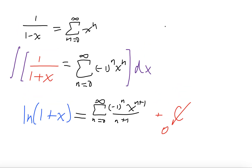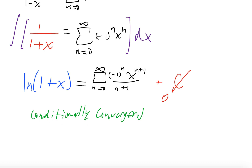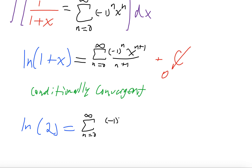Even though the geometric series itself converges only when the absolute value of x is strictly less than 1, this integrated series is conditionally convergent, meaning we can plug in x equals 1 at the endpoint. Doing so gives ln(2) equals the sum from n equals 0 to infinity of (minus 1)^n over (n plus 1).